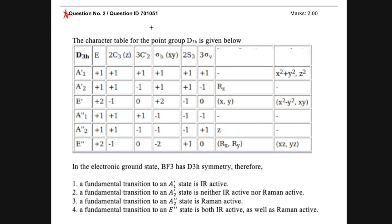Starting from question ID 701051: the character table for the point group D3H is given. In the electronic ground state, BF3 has D3H symmetry. The options ask whether a fundamental transition to an A1-dash state is IR active, whether A2-dash is IR or Raman active, whether A2-double-dash is Raman active, and whether E-double-dash is both IR and Raman active. This was a question from a previous year — if you had solved previous year questions, it would have been easy.